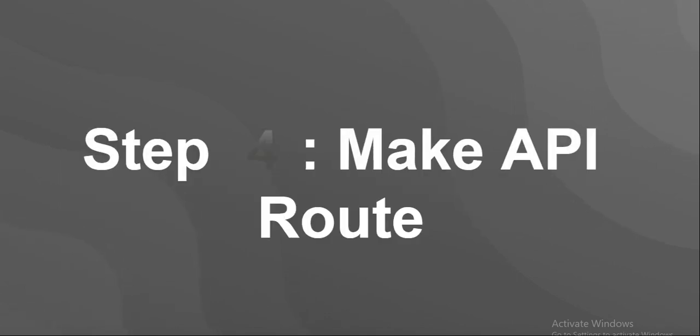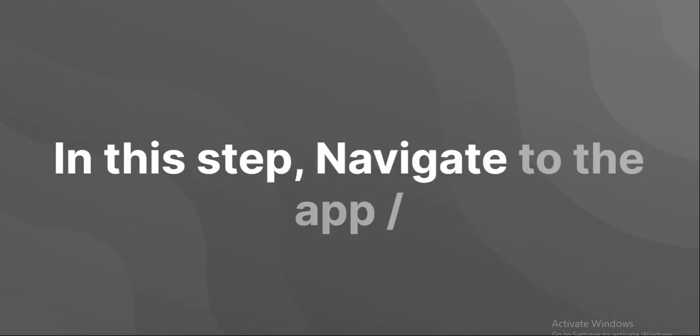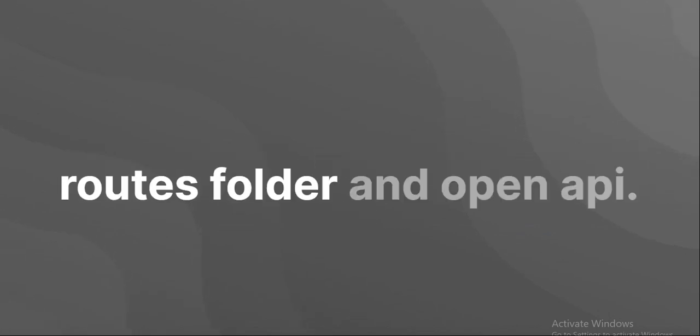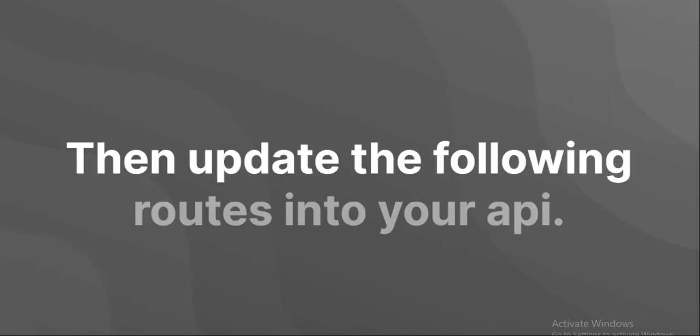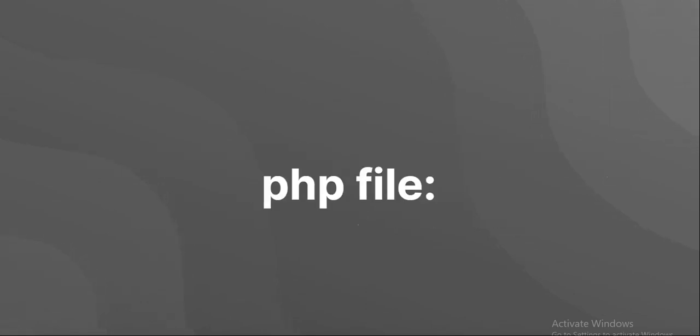Create API routes. Navigate to the app/routes folder and open api.php file. Then update the following routes into your api.php file.